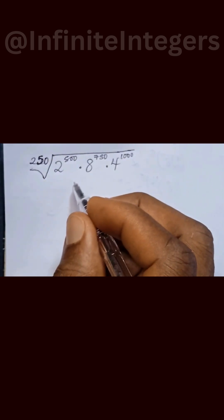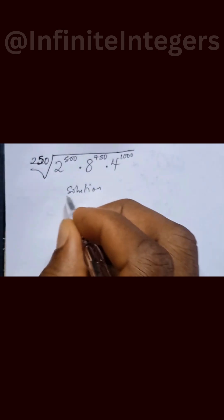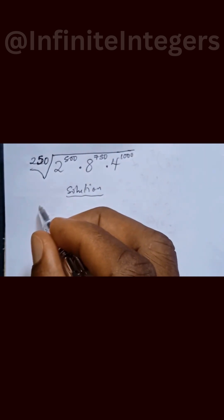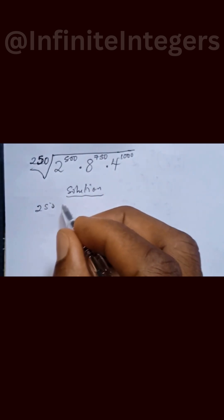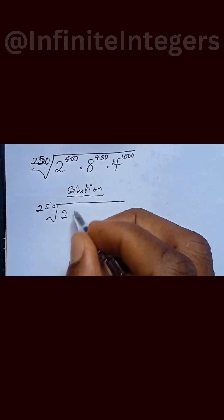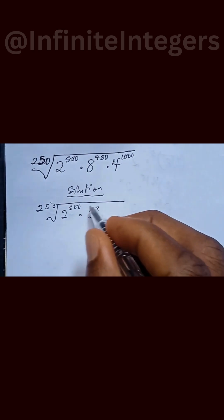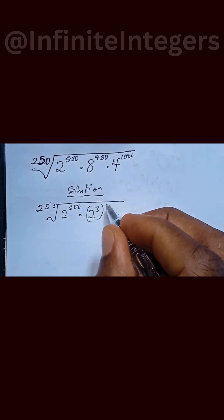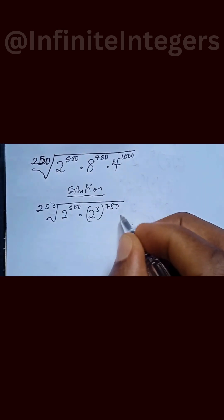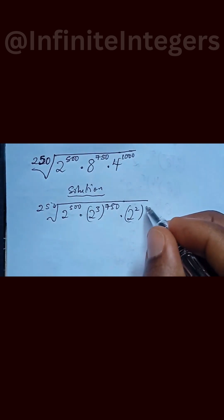So to simplify this, we have our solution to be 250th root of 2 to the power of 500, multiply by 2 to the power of 3 into a bracket to the power of 750, multiply by 2 to the power of 2 into a bracket to the power of 1000.